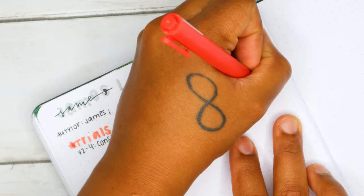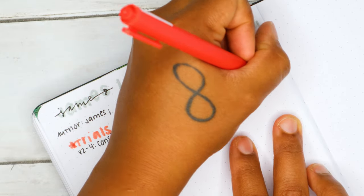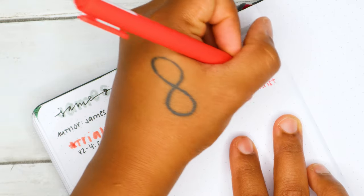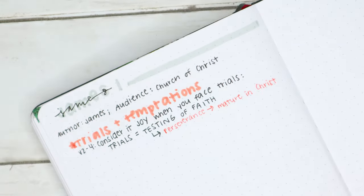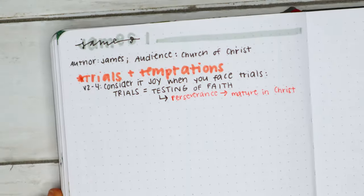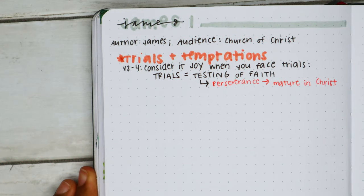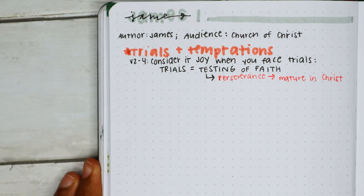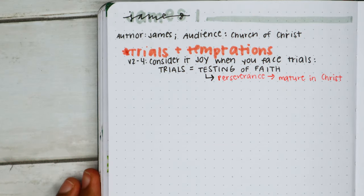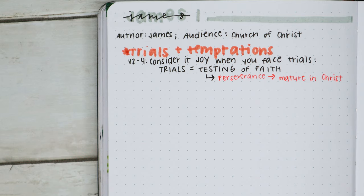We talk about maturity in terms of age sometimes, but you can be 40 years old and immature. Being mature spiritually and also mentally is subject to the individual.